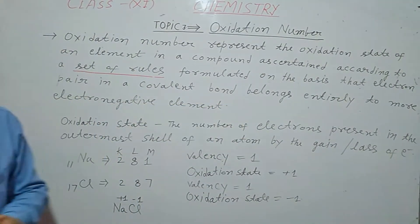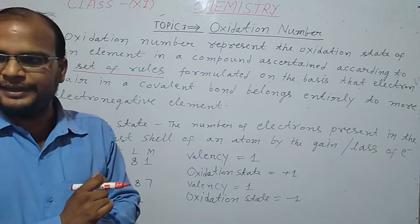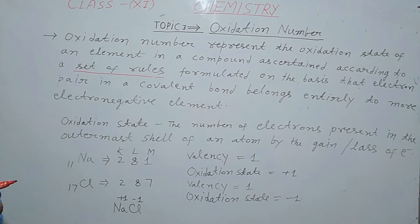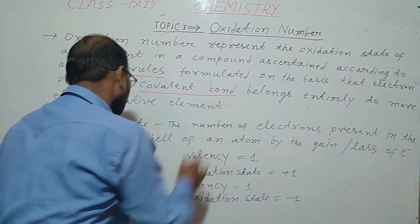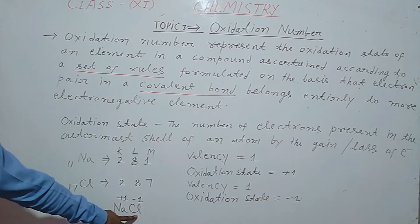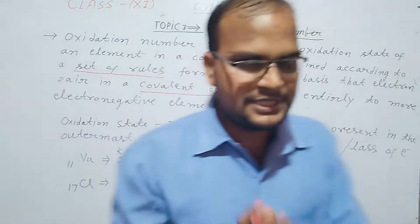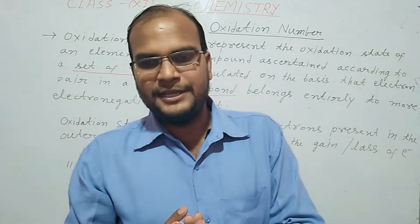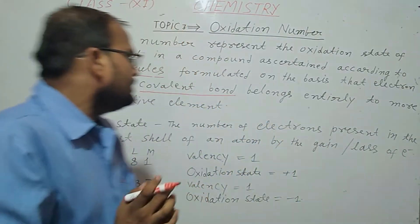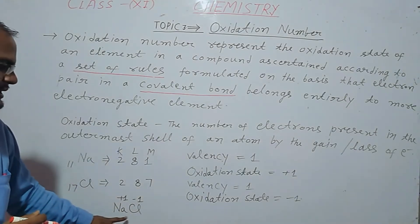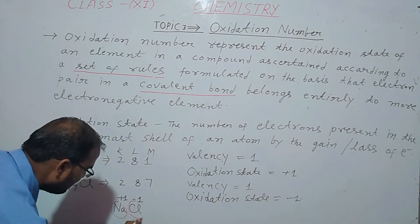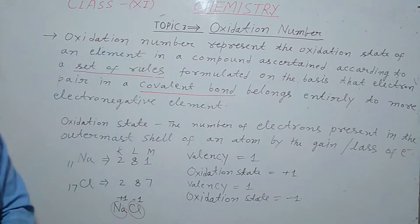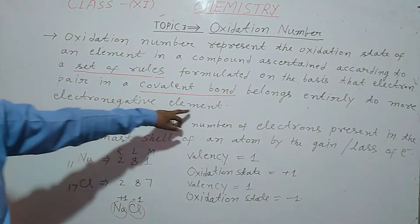When compound forms, whether electrovalent or covalent, in covalent bonds the electron pair belongs entirely to more electronegative elements.